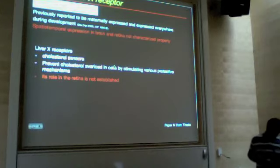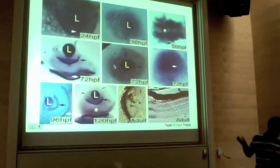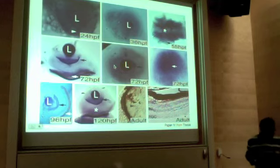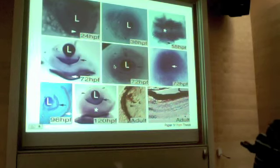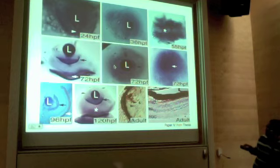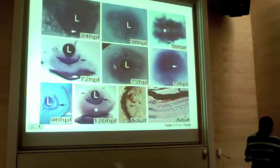We wanted to see where LXR is expressed in the retina, and we did that by in situ hybridization. In the early retina, LXR was expressed everywhere in the retina and lens. By 36 hours, after neurogenesis starts, expression goes down in the retina but can still be detected in the lens. By 55 hours, expression becomes more and more localized to the retinal ganglion cell layer and the optic nerve. Certain nuclei in the brain also intensely express LXR. As development proceeds, LXR gets localized in the retinal ganglion cell layer and the retinal pigment epithelial layer, and eventually also in the ciliary marginal zone — where continuous proliferation happens in fish — and in all neuronal layers of the eye.